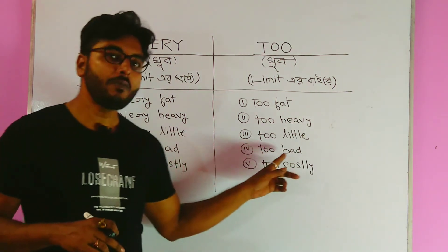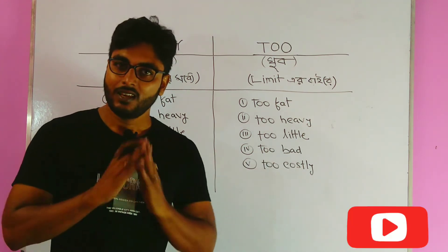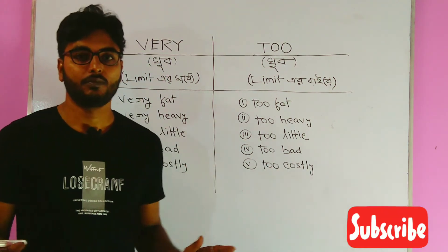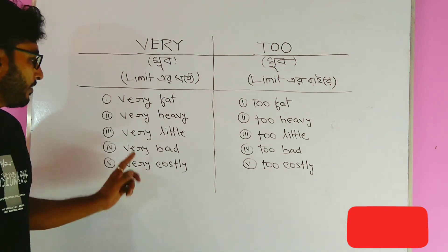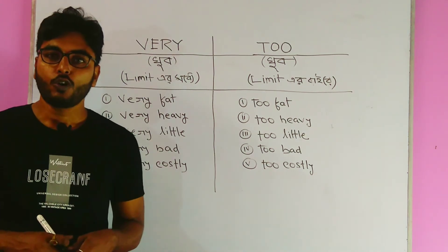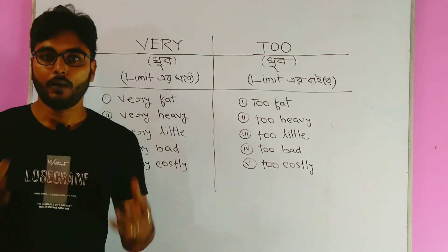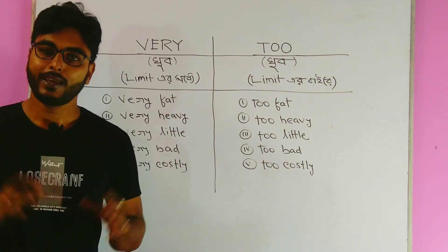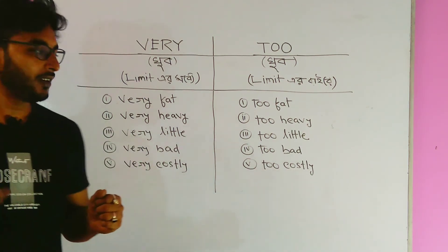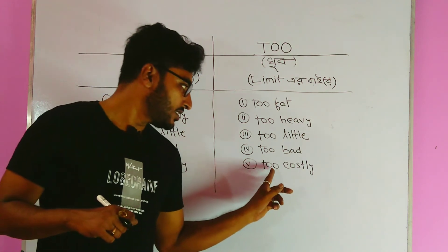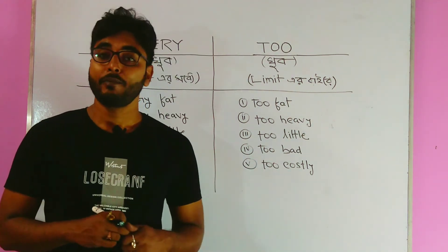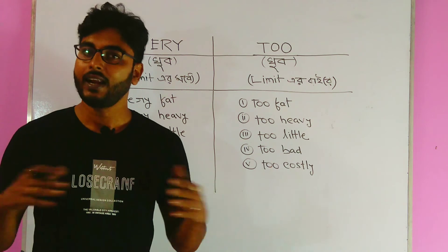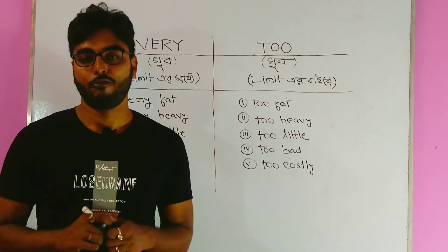Too bad — it means we cannot tolerate it, it is excessively bad. Very costly — it means very expensive, but I can afford it, I can buy it. But when we say too costly, it means it is extremely costly and I cannot buy or afford it.